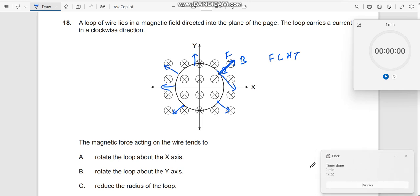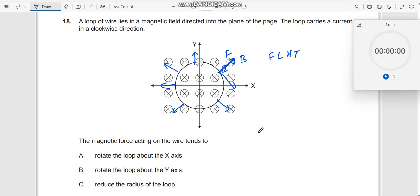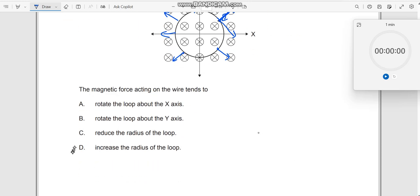At every point, the force is acting outwards, which means the radius of the loop should increase. So, now let us look at what will happen. It should increase the radius of the loop. Let us move on to the next one.